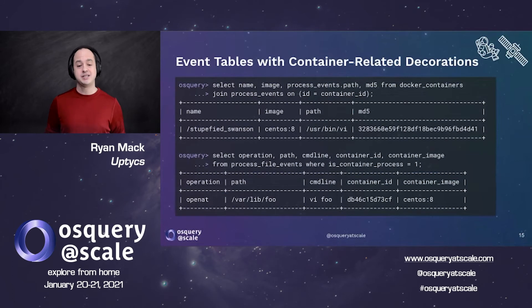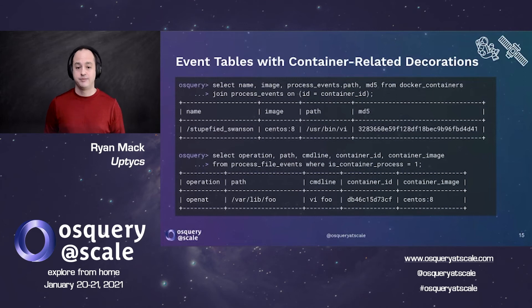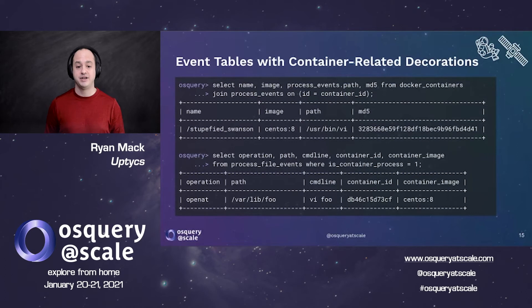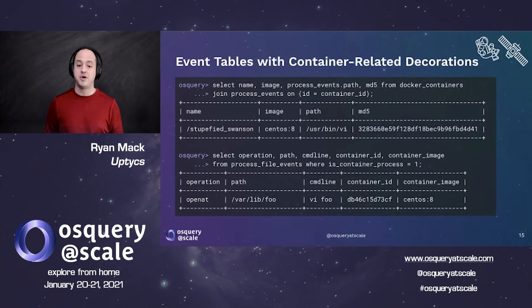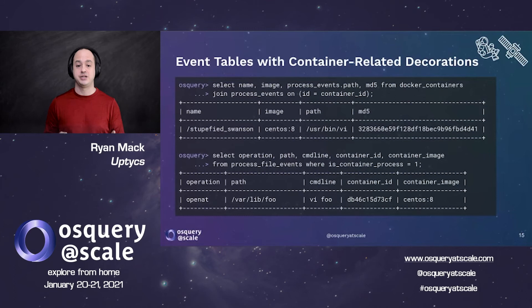Of course, not every process is going to get captured if you're periodically polling the processes table. We want to leverage the eventing image to capture very short-lived processes, as well as file and socket events. Those data sources are now coming from eBPF, which captures enough container information that we can add decorations allowing you to understand the container context where these events are happening. In these examples, I'm showing process events where a user is running VI inside of a container, and we're able to connect that back to the image name and the container name from the container runtime. Similarly, we're able to detect file modification and connect it back to the container name and container ID from the runtime.